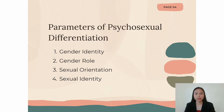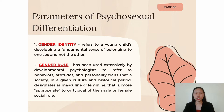Next, under the parameters of psychosexual differentiation, it is deconstructed into four components, namely gender identity, gender role, sexual orientation, and sexual identity.